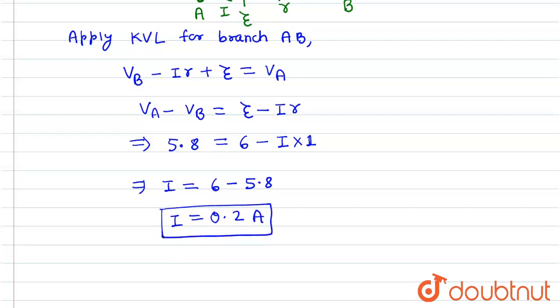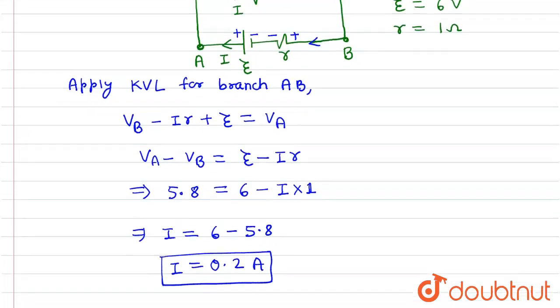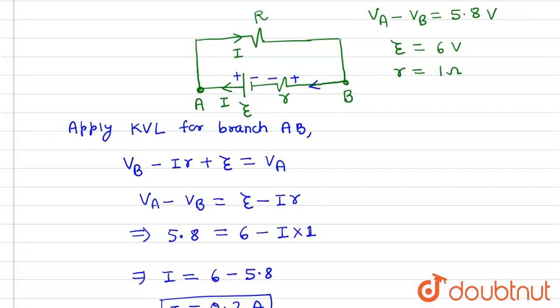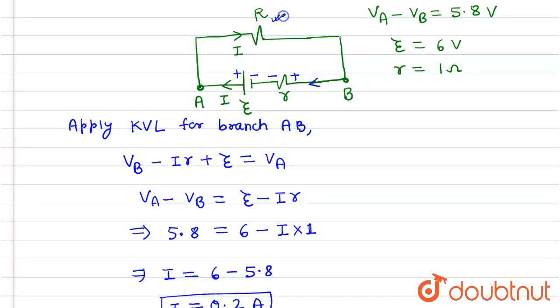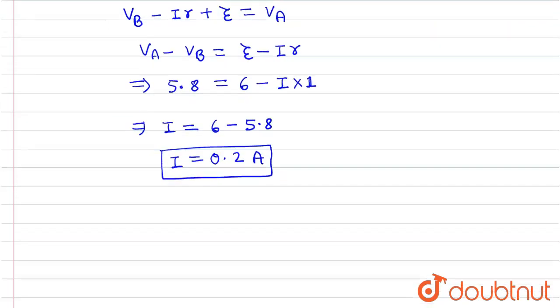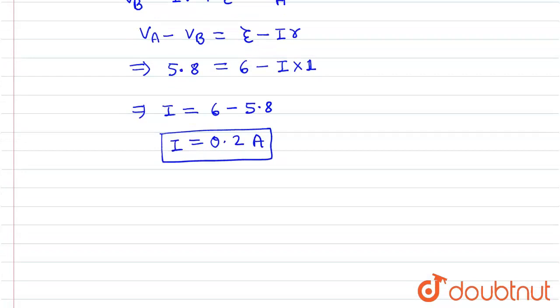Now we have to find the external resistance R. So again apply the Kirchhoff's voltage law from A to B, now including the external resistance.